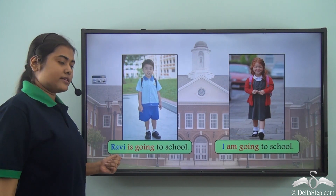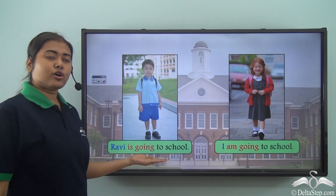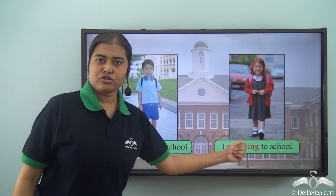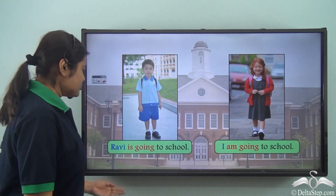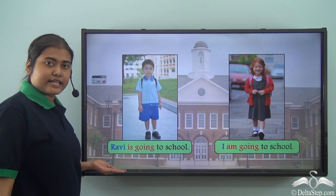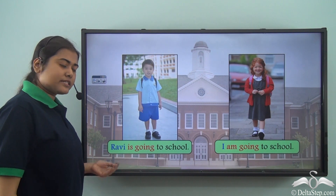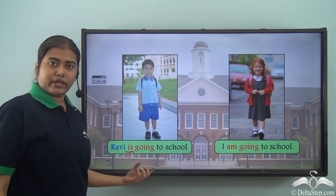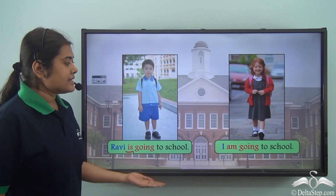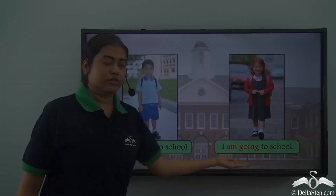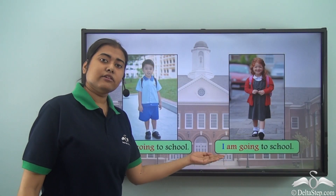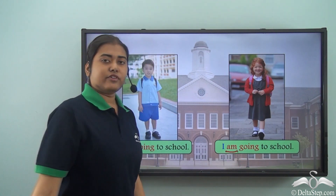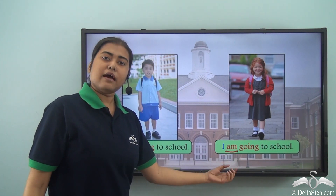Look at this: Ravi is going to school. I am going to school. Here Ravi represents singular third person, therefore we use 'is going'. And 'I' represents singular first person, therefore we use 'am' with it.